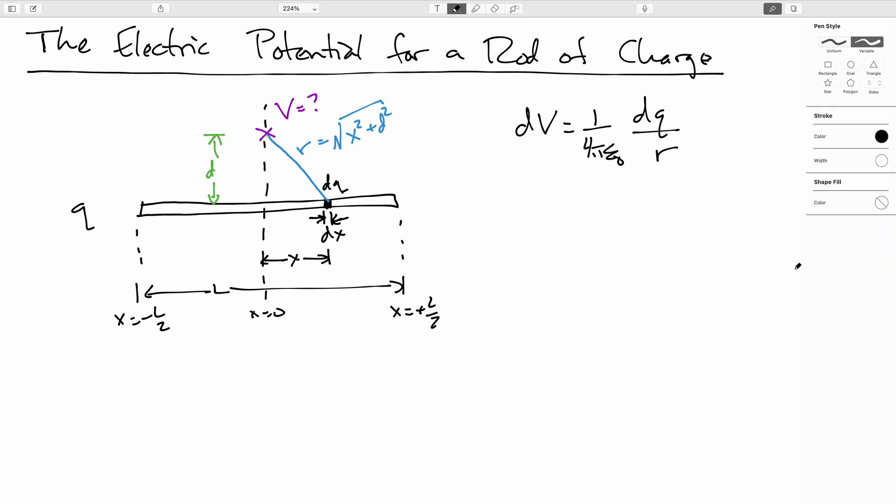So, the only other thing to do is to go and figure out how to express DQ in terms of DX. So again, we can say that the linear charge density is uniform. Then this means that DQ is to DX as the entire charge Q is to the whole length. So we can write DQ as Q over L DX.